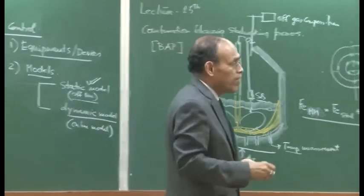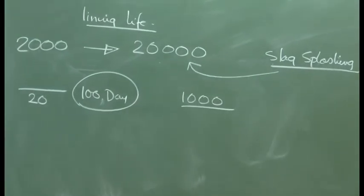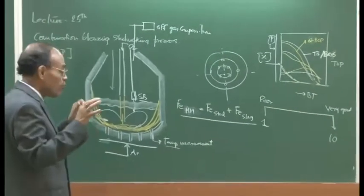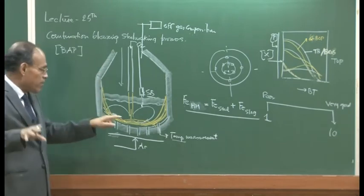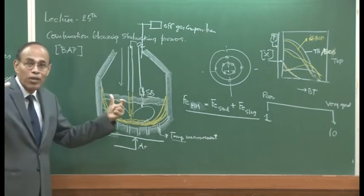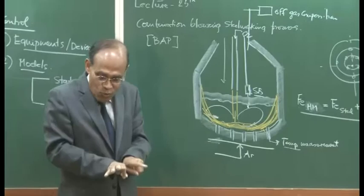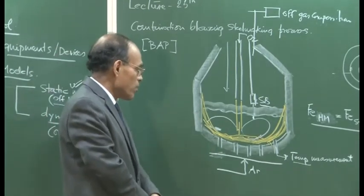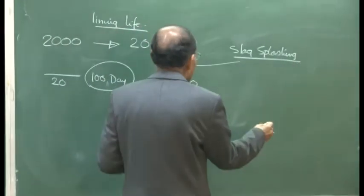Slag splashing is a very important technique for improving lining life. Most converters showing good refractory life really rely on slag splashing. When nitrogen is blown, the impinging gas jet causes slag to flow radially and rise up the converter walls. The slag then gets sintered onto the refractory surface — since both are oxide materials they have a natural affinity to establish bonds — and this is how slag splashing ensures better life of the refractory.